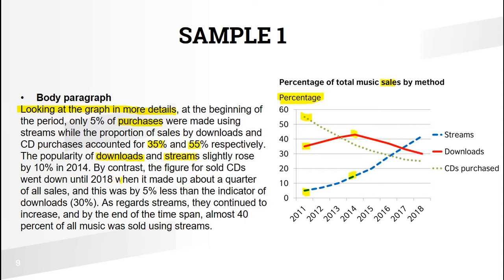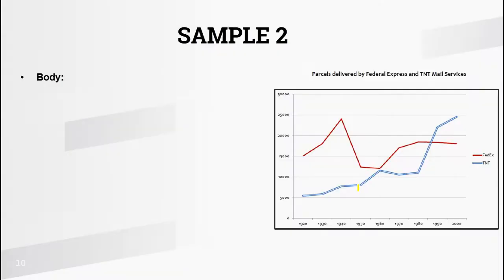By contrast, the figure for sold CDs went down until 2018, when it made up about a quarter of all sales — 25% — which was 5% less than the indicator for downloads at 30%. As regards streams, they continued to increase, and by the end of the period almost 40% of all music was sold using streams. With a couple of sentences you can finish your body paragraph.